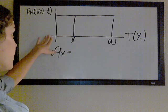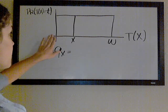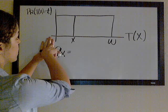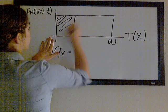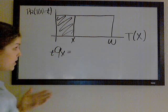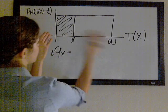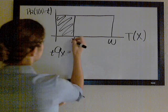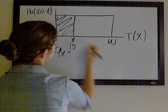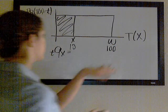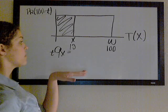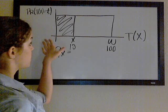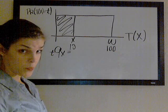Starting at zero — forget about tqx for a moment — if you're starting at zero and you want to know the probability that your future lifetime is somewhere in a given interval, it's pretty easy to see that it's going to be the ratio of those intervals. It's easier to see if you put values to it: say this is 10 and your limiting age is 100. The probability that your future lifetime is somewhere between zero and 10 is 10 over 100, or 0.1.